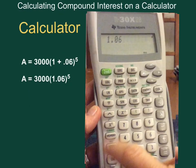When calculating compound interest, you want to type in your base first, your 1.06, and then you're looking for your exponent. This is called the caret. So you're going to type in your base and then click on this button right here.